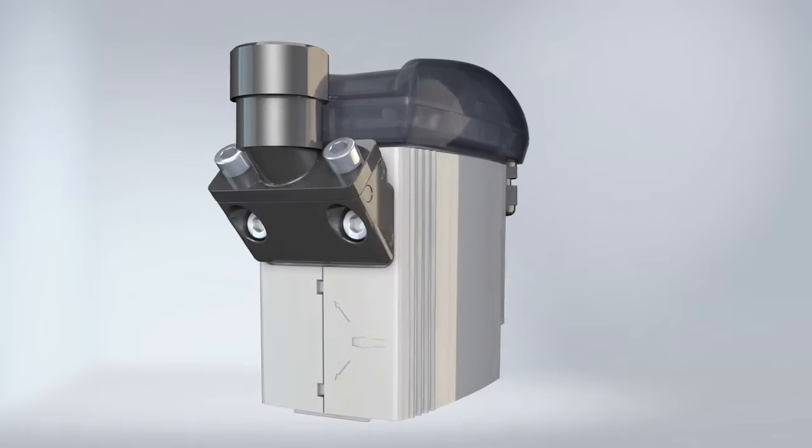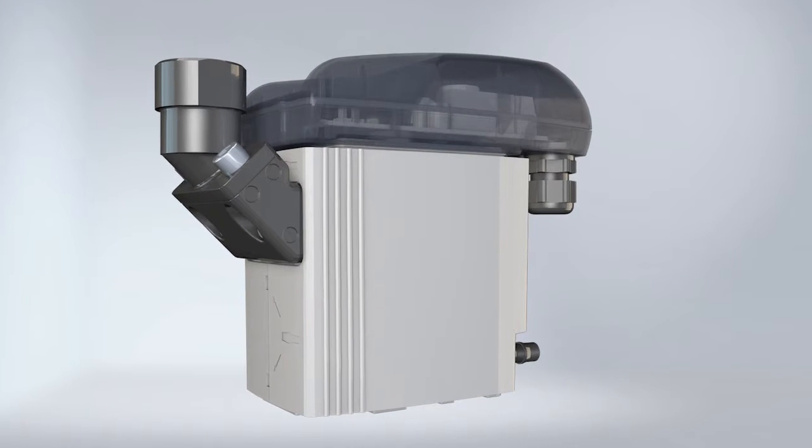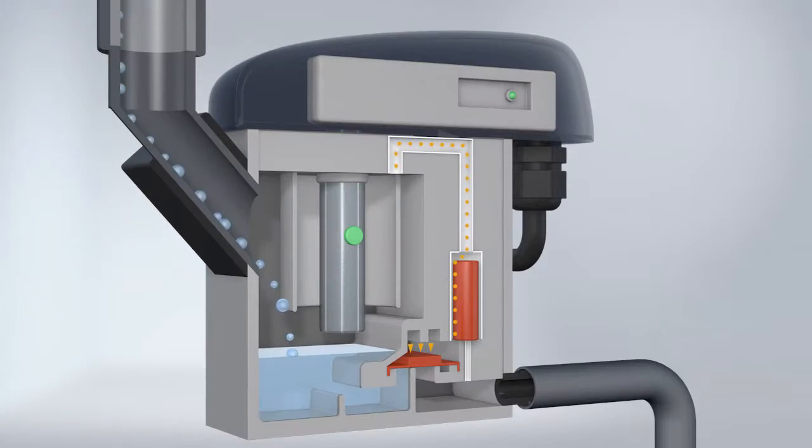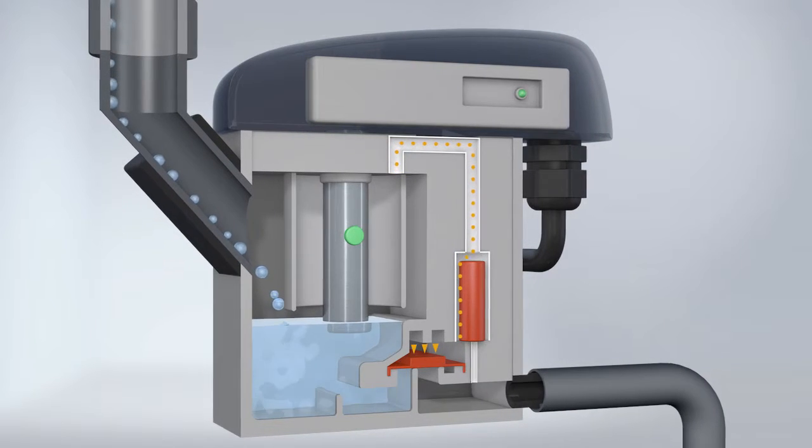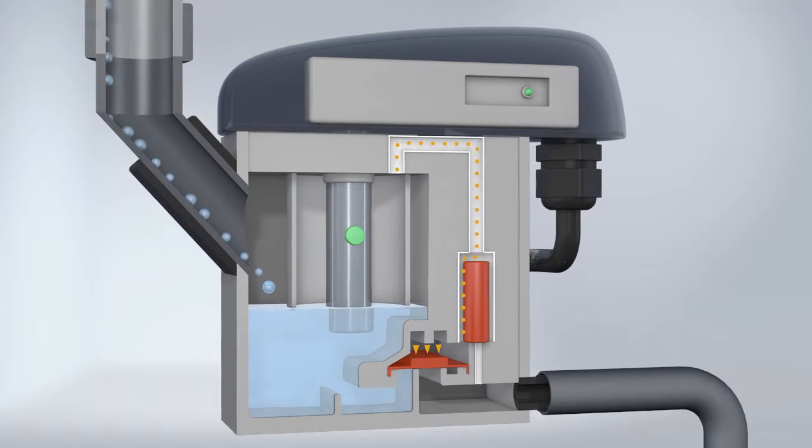But exactly how does it work? Adapted to the amount of condensate and without compressed air loss, condensate flows in via the feed line, whilst air pressure from the vent pipe keeps the membrane closed from above.